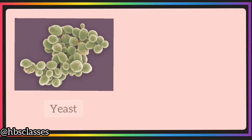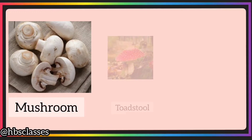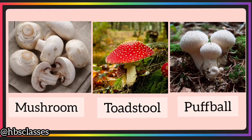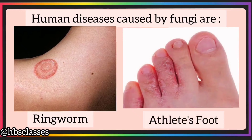Fungi like yeast and molds are very small in size and can be seen clearly only with a microscope, so yeast and molds are fungi considered to be microorganisms. Fungi such as mushrooms, toadstools, and puffballs are bigger in size. Some human diseases caused by fungi are ringworm and athlete's foot.